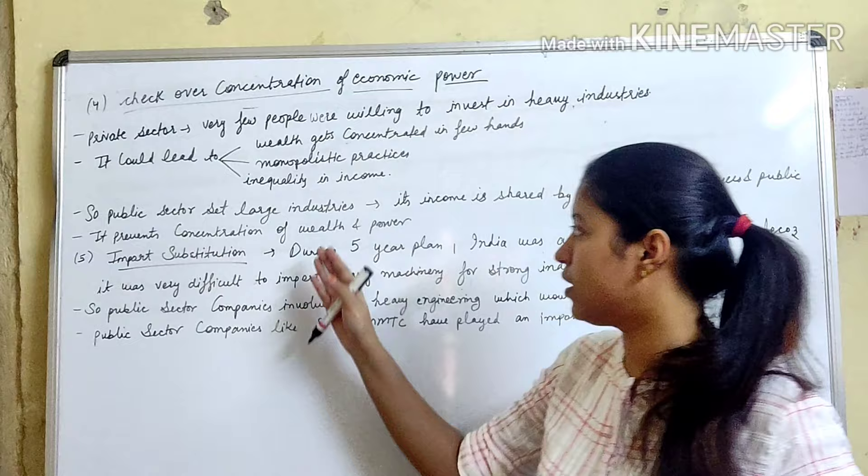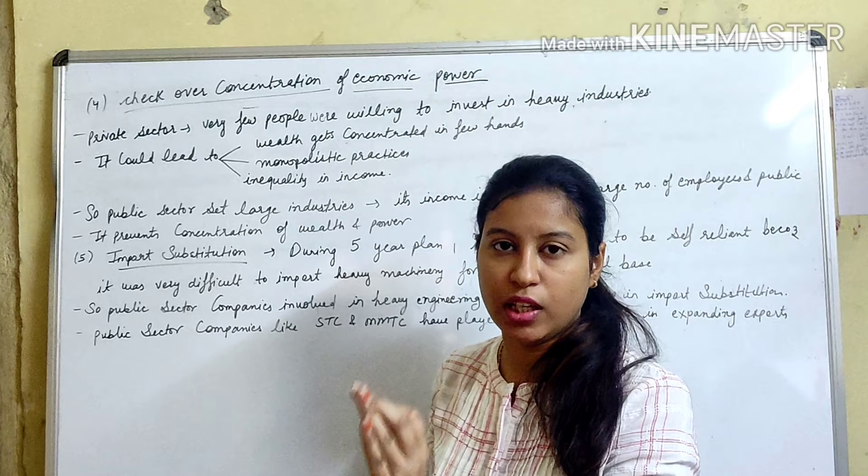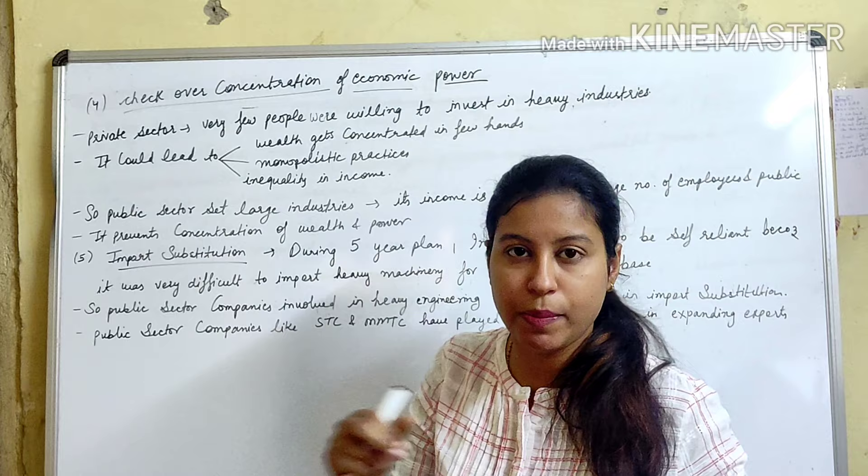The concentration of wealth means that only one person or a few people had control over all the wealth and money, which the public sector was meant to address.